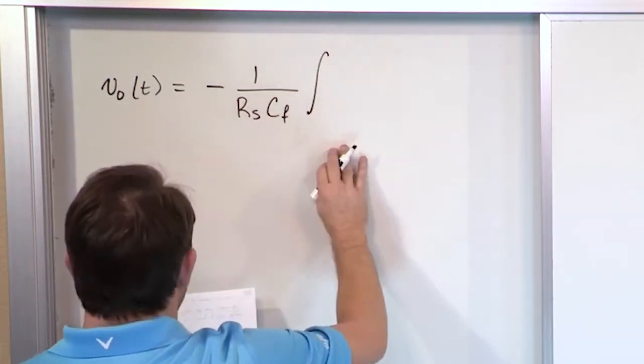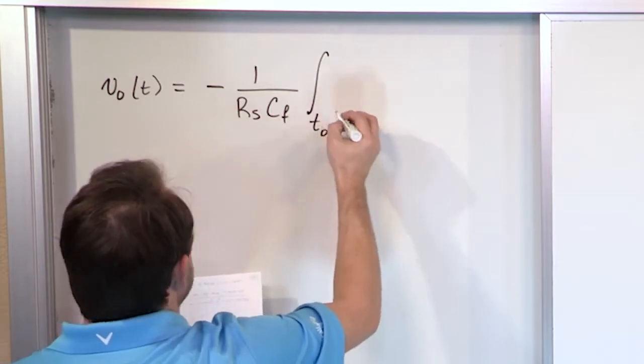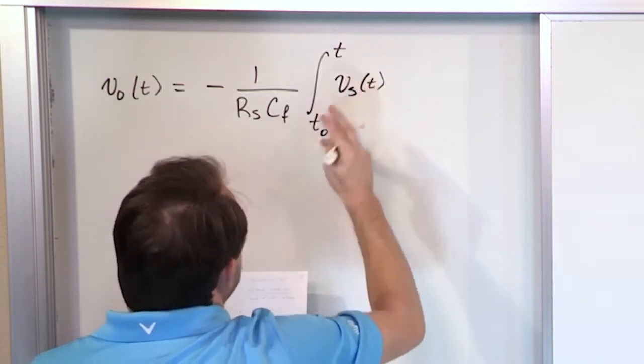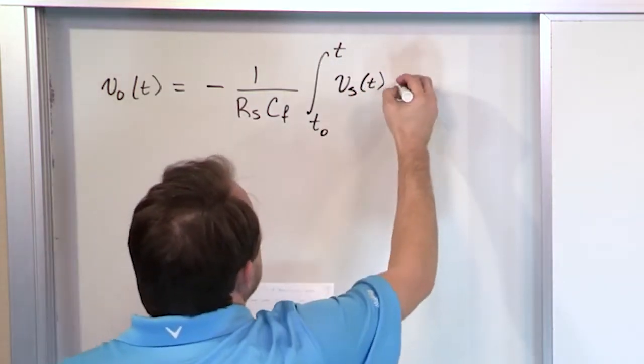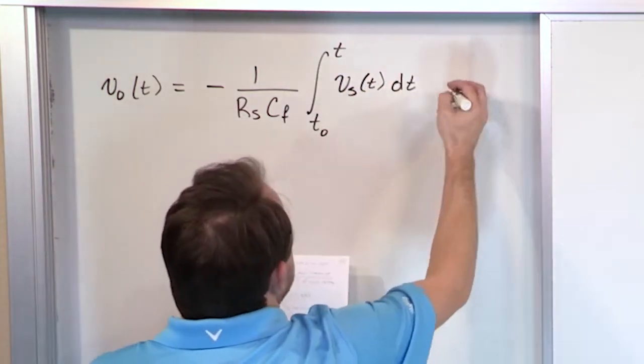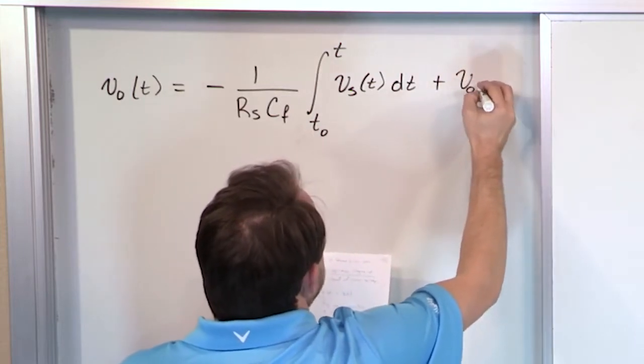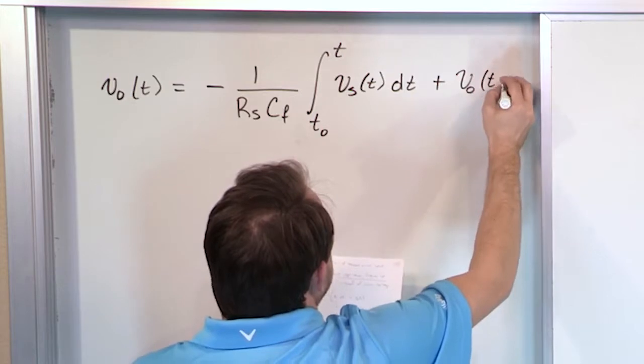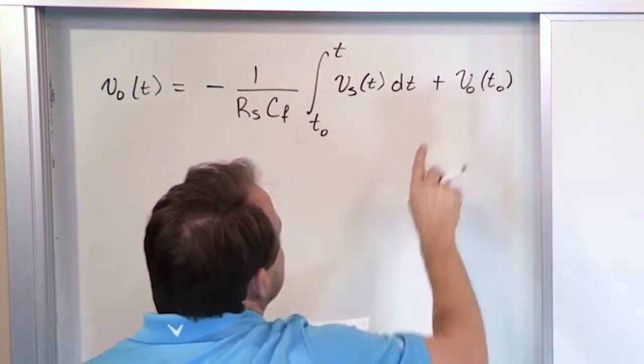That's a constant. And then it's an integral from T0 up to the value of T. The source is a function of time, or can be a function of time. You're integrating that over time. And then you have an initial condition, which is V output, the output of the op amp at time T0. So this is the initial charge on the capacitor.